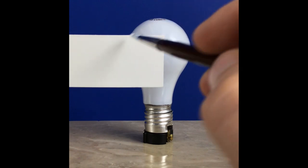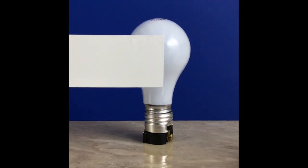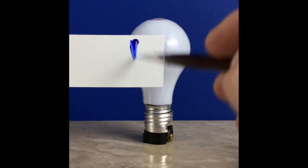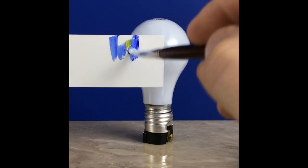I'm going to match the colors of this light bulb so that the paper blends in with the background. Start with titanium white, ultramarine blue, a little bit of hansi yellow opaque,